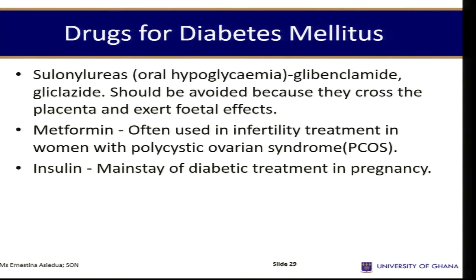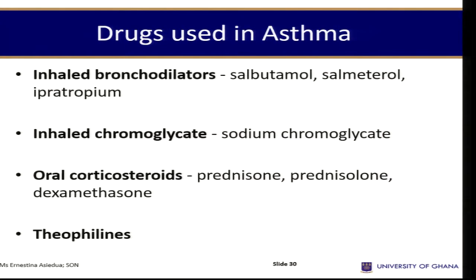Drugs for diabetes mellitus include oral hypoglycemics — metformin is often used in infertility treatments in women with polycystic ovarian syndrome — and insulin, which is the mainstay of diabetic treatment in pregnancy. For women with asthma, we use inhaled bronchodilators such as salbutamol inhalers, inhaled cromoglycate sodium inhalers, oral corticosteroids like prednisolone and dexamethasone, and theophyllines.